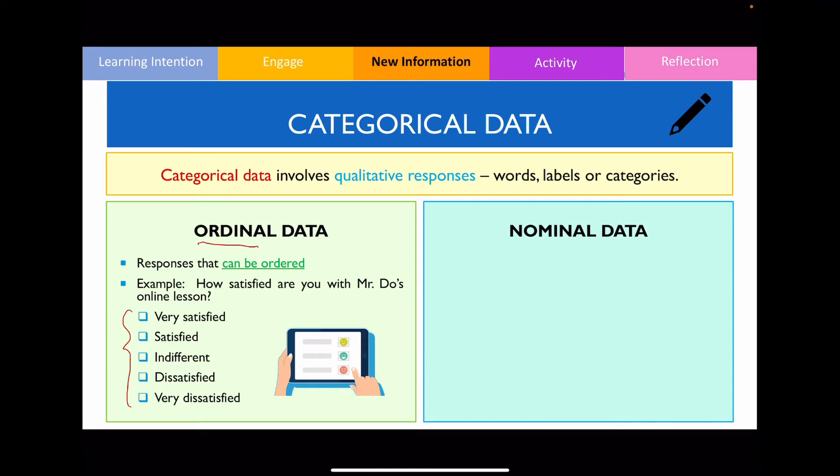dissatisfied, and very dissatisfied, there is an actual hierarchy where you can actually list or place the responses in a particular order. In contrast, nominal data, so think of no order in this case, are responses where there is no order associated with them at all.